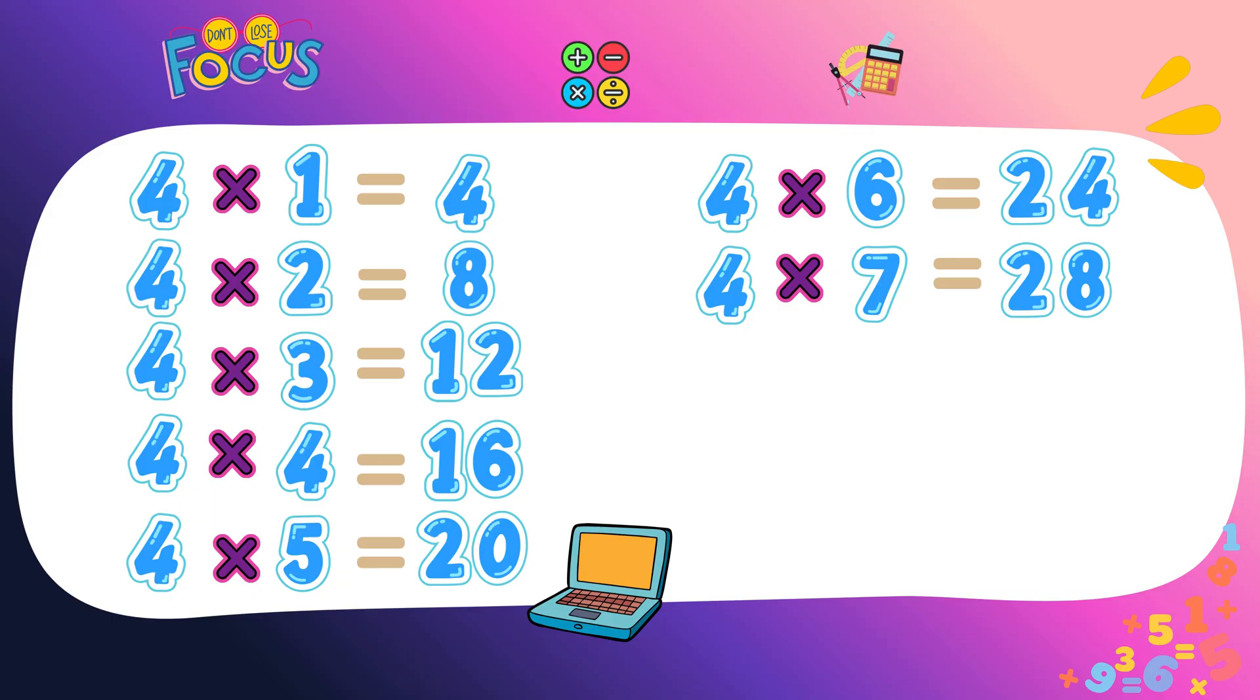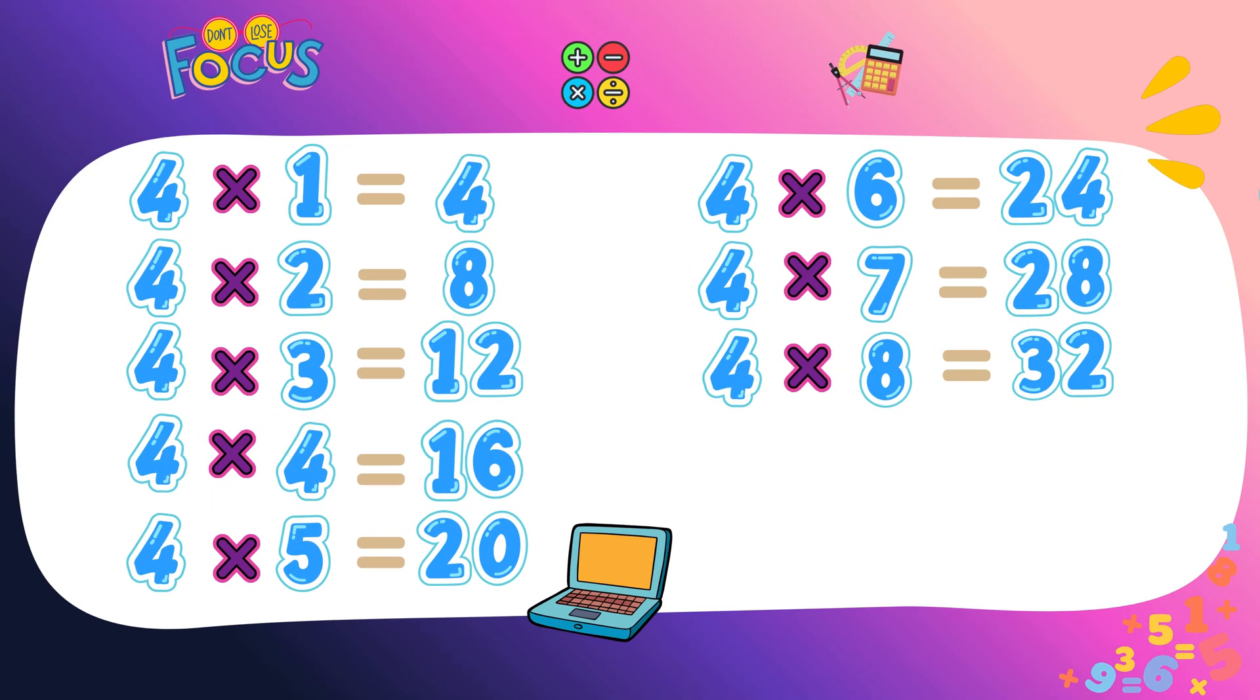Four sixes are twenty-four, four sixes are twenty-four. Four sevens twenty-eight, four sevens twenty-eight. You're doing great, that's really neat! Four eights thirty-two.